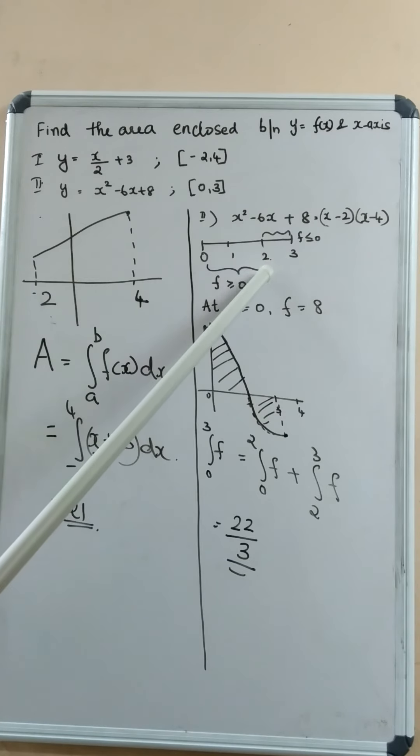It is less than or equal to 0. Therefore, in this sub-interval 2 to 3, the curve lies below the x-axis.